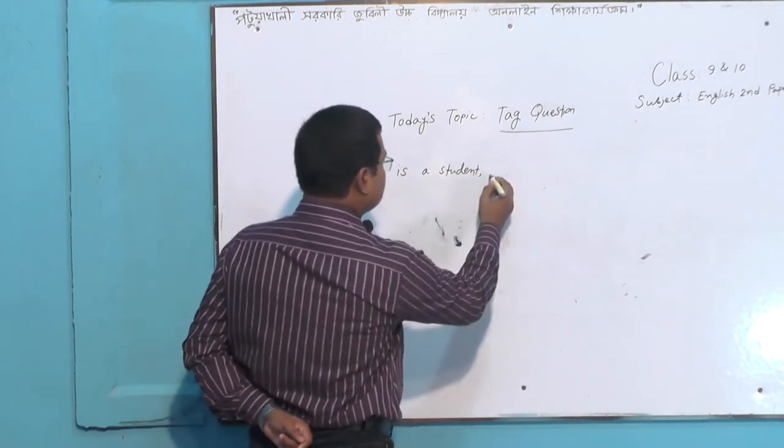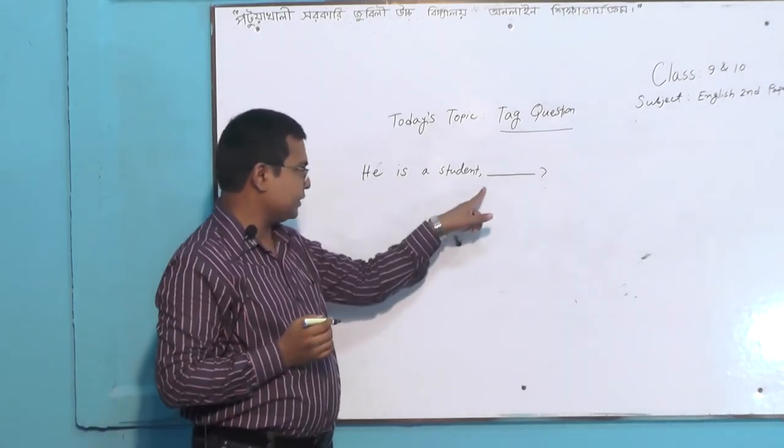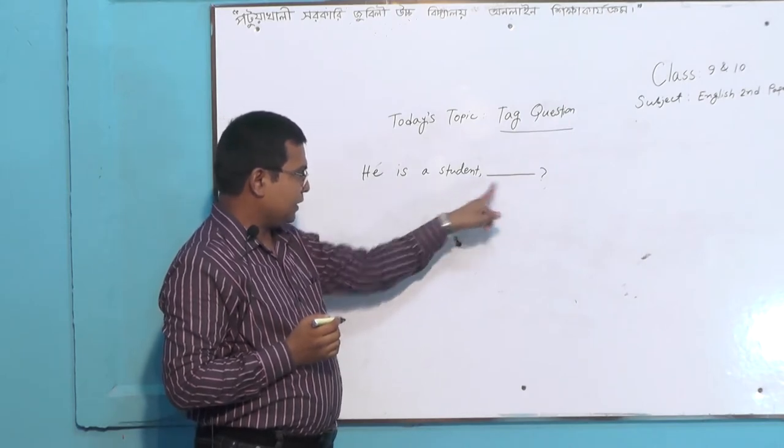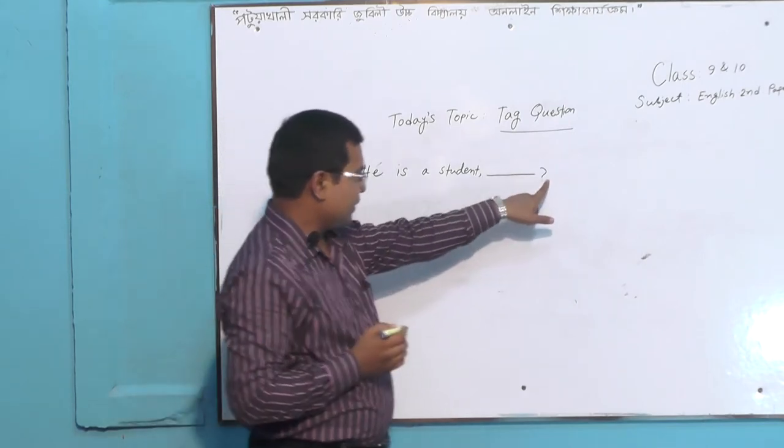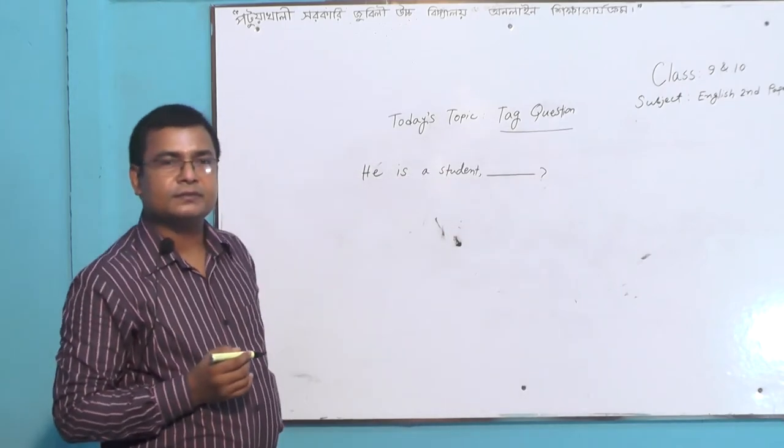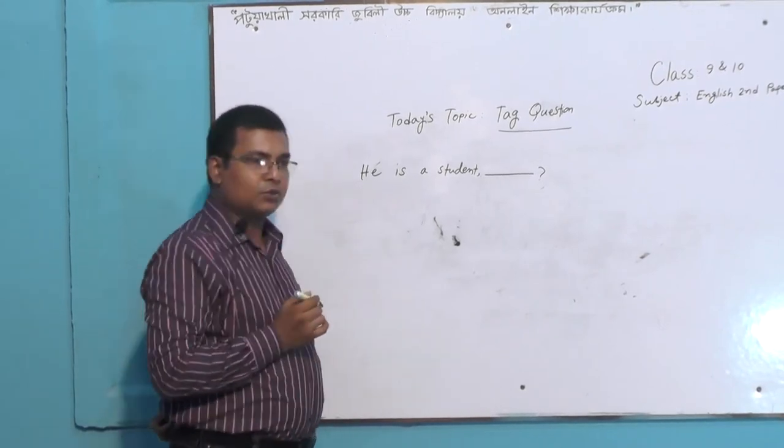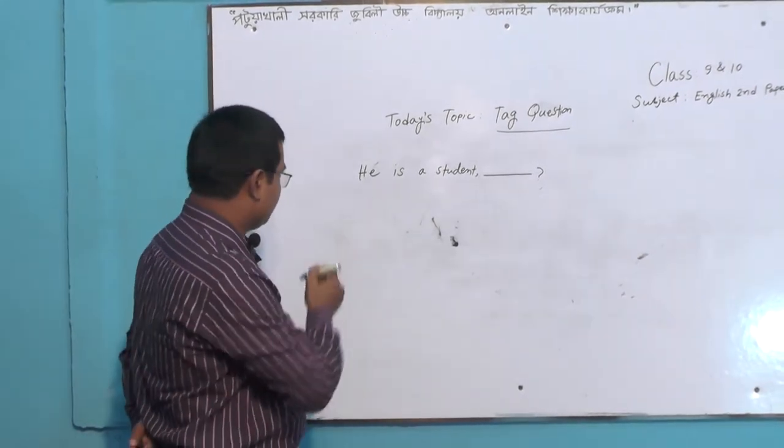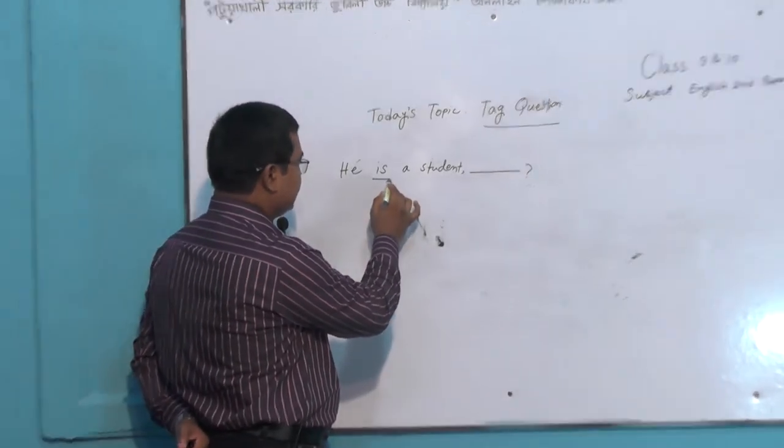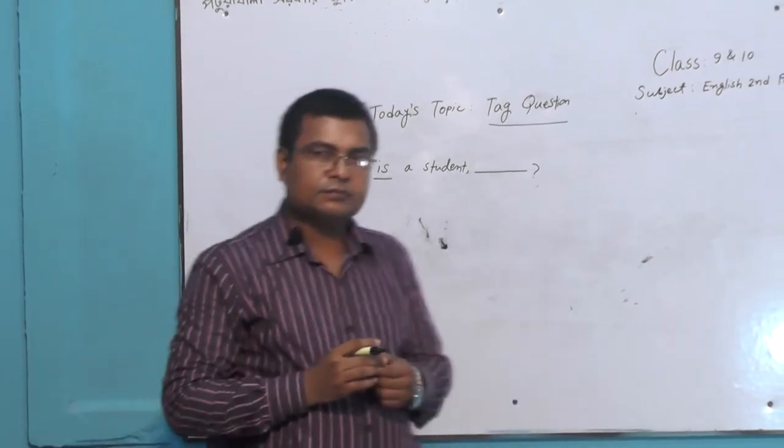Look. 'He is a student' - this is a sentence and a comma, then a gap and question mark. Here we will add the question. It is called tag question and there are some rules to write the question here.